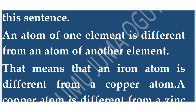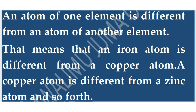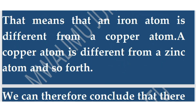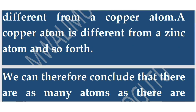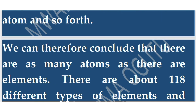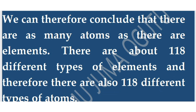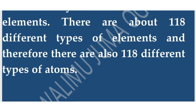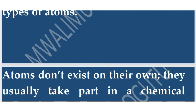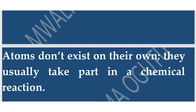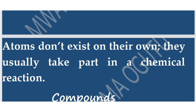An iron atom is different from a copper atom, and a copper atom is different from a zinc atom. As we have 118 elements, we also have 118 different types of atoms — there are as many atoms as there are elements. Atoms do not exist on their own; they usually take part in a chemical reaction.